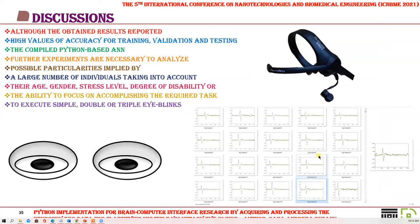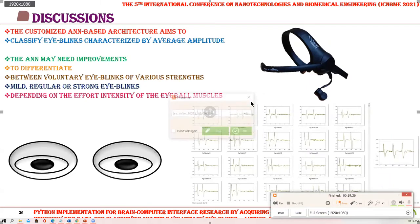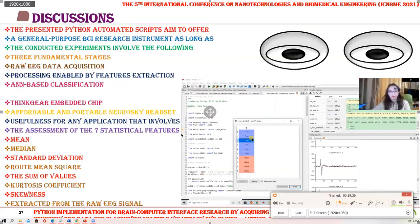Although the obtained results reported high accuracy values for training, validation, and testing the compiled Python-based artificial neural network, further experiments are necessary to analyze possible particularities implied by a large number of individuals, taking into account their age, gender, stress level, degree of disability, or ability to focus on accomplishing the required tasks. The customized ANN-based architecture aims to classify eye blinks of average strength. The ANN may need improvements to differentiate between voluntary eye blinks of various strengths. The presented Python automated scripts offer a general-purpose BCI research instrument enabling: raw EEG data acquisition, processing by feature extraction, and ANN-based classification.